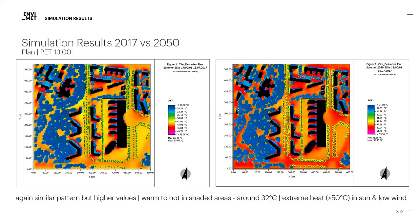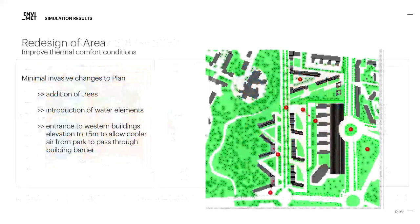In summary, the new plans for SeedDescart and developments induced by climate change yield increasing temperatures and a strong decline in thermal comfort for human beings on the campus. That is why we made some suggestions for redesign of the area — the redesign should of course be only minimally invasive to still follow the plan's objectives. Our suggested heat mitigation measures are: an addition of trees near the buildings and main streets, an introduction of water elements such as fountains or water sprays, and as a third measure, we altered the morphology of the newly planned buildings near the park by elevating the center part of those buildings by 5 meters to allow the cooler air of the park to flow through the barrier and cool the whole campus area.